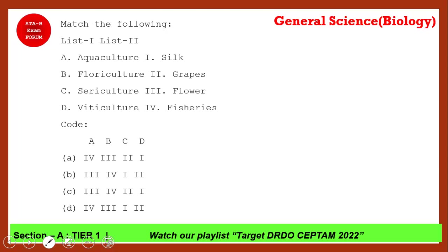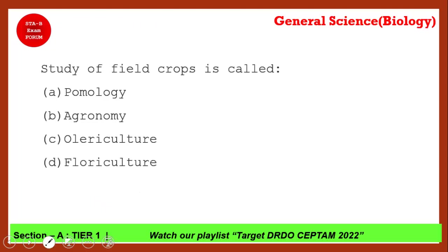This question requires matching. Aquaculture is related to fisheries, so we narrow it to options A and D. Floriculture is related to flowers, and sericulture is related to silk, so C maps to one. Option D is the correct answer for this matching question.